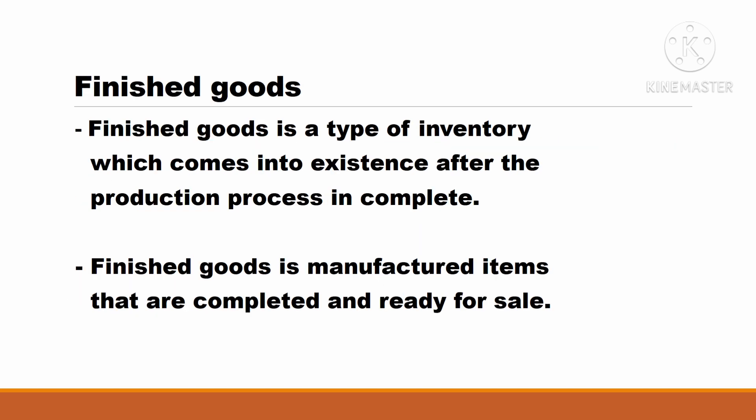Finished goods is a type of inventory which comes into existence after the production process is complete. In other words, finished goods are manufactured items that are complete and ready for sale.